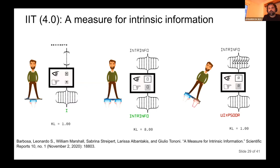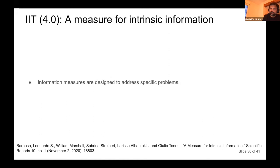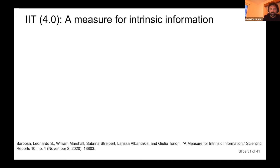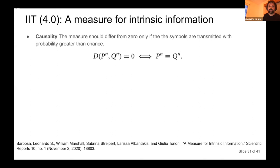A quick recap: information measures are designed to address specific problems; all distances are either additive or sub-additive for all independent probability distributions. The first property we require is causality, based on existence: the measure should be zero if and only if, when you cut the system and inject noise, you get exactly the same probability. Basically the system doesn't exist — there's nothing there. P here is the probability distribution of observing units in a given state from the TPM, and Q is the same probability after you partition.